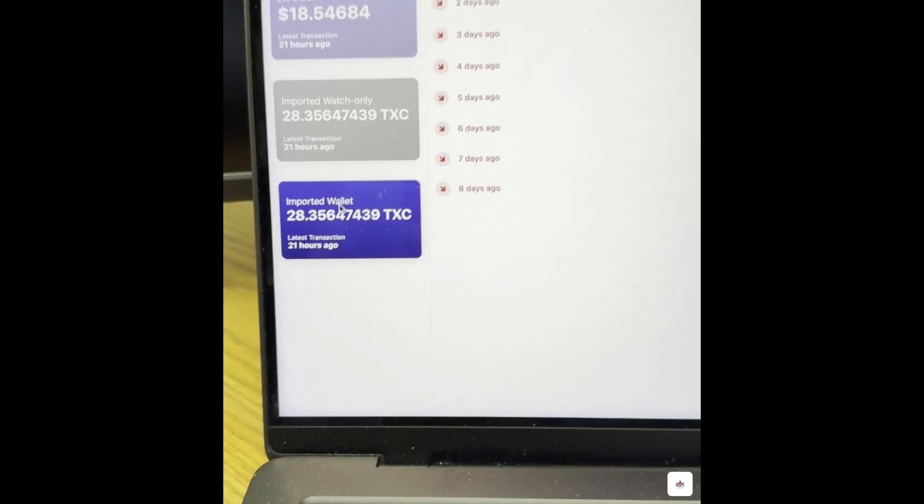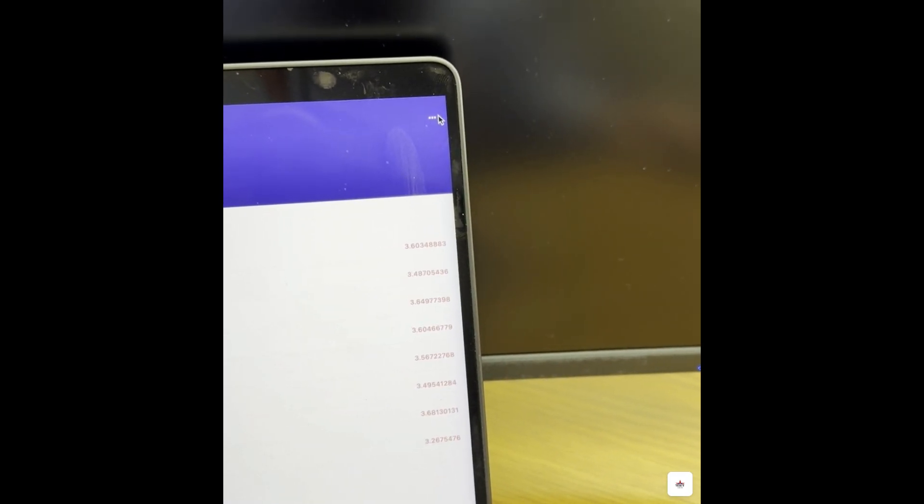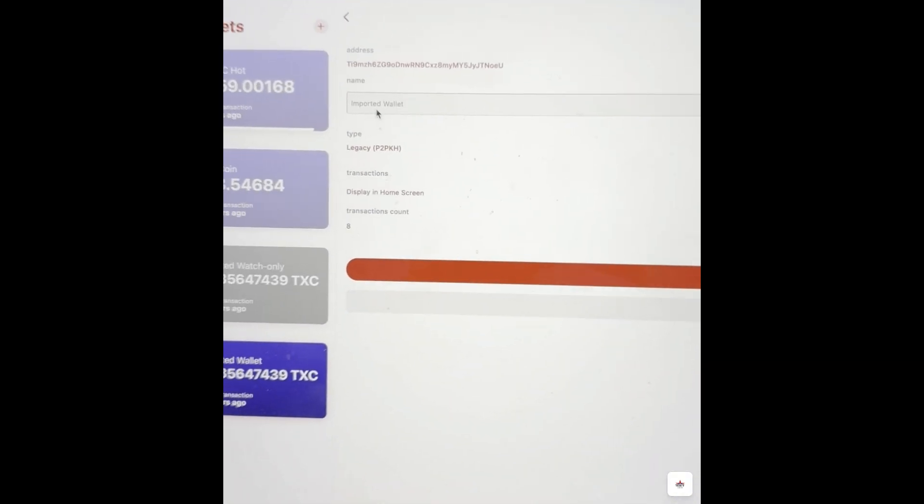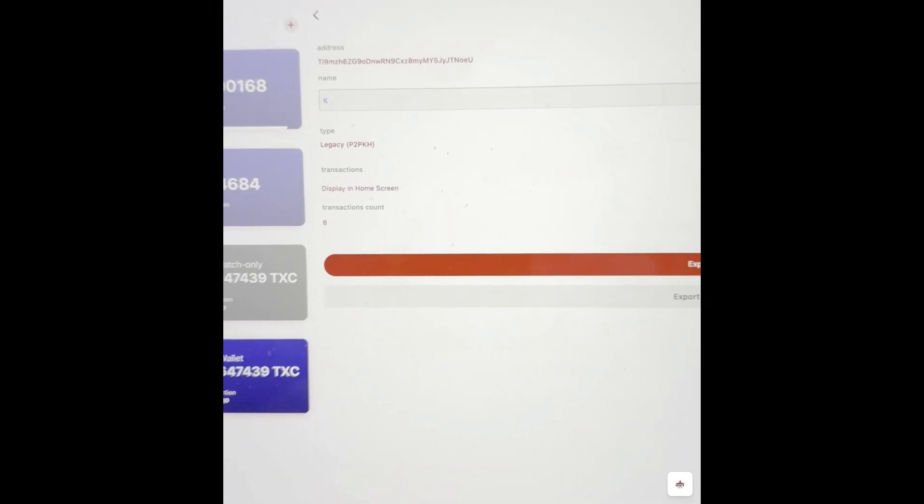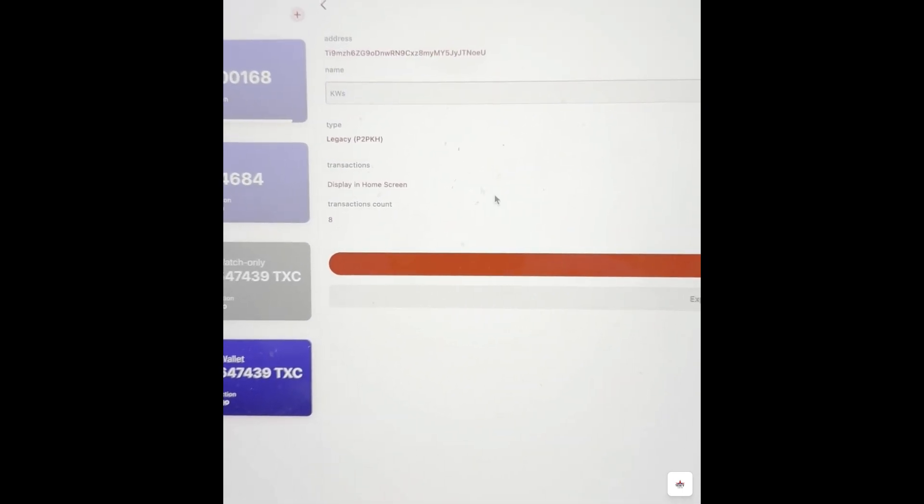You can easily change the name of your wallet at any time by selecting your wallet, selecting the three dots in the upper right corner of the screen. Next, you will enter the name you would like to give your wallet in the name field. When you finish entering the name, you will click save. Voila! Your wallet now has a new name.